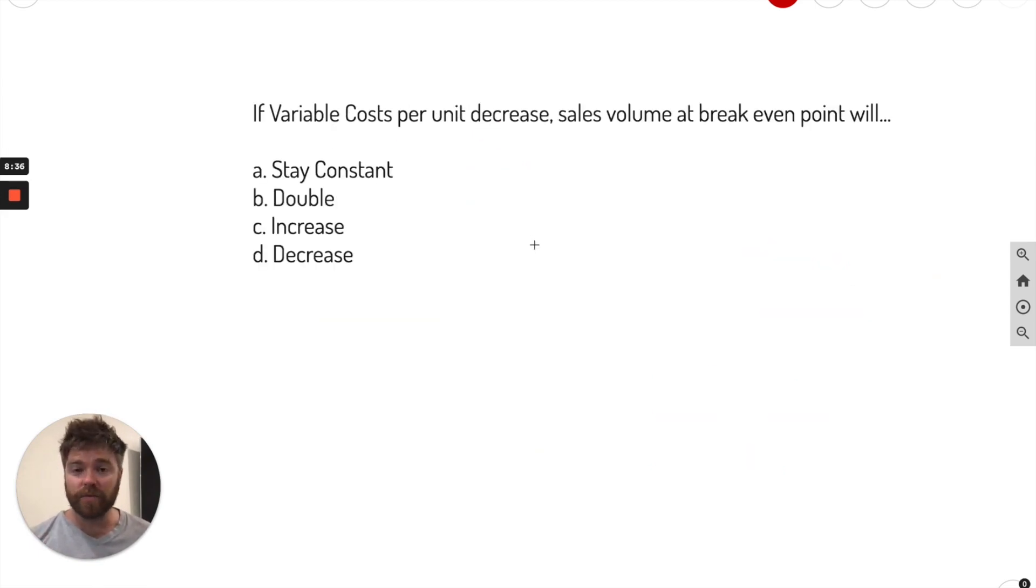Okay, so this is a conceptual problem. It's saying if variable costs per unit decrease, sales volume at break even point will, and it gives you some options. So what will it do? Now this is pretty tricky. We've got to figure out what would happen if one thing affects the other. So what we're going to do here actually is add some numbers to it. Let's call variable costs per unit, we'll just call it $10. And let's call sales, this is per unit by the way, we'll call sales, I don't know, 20.